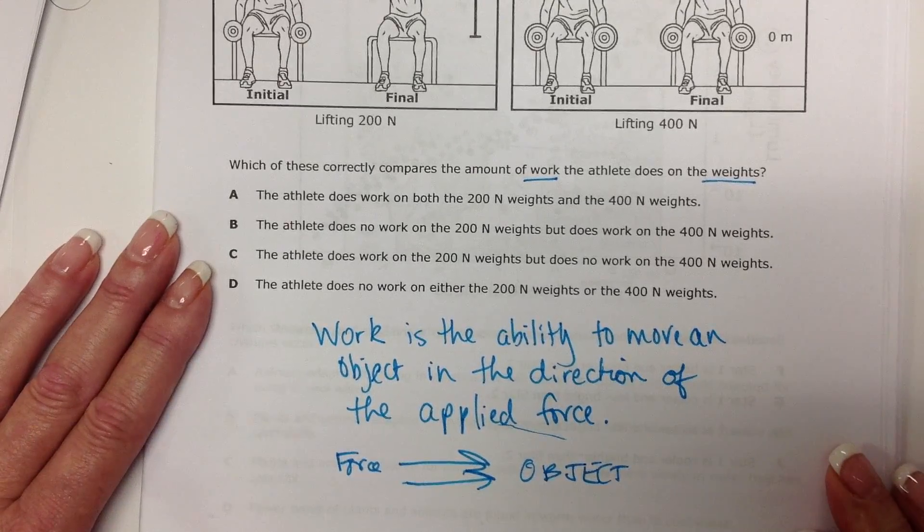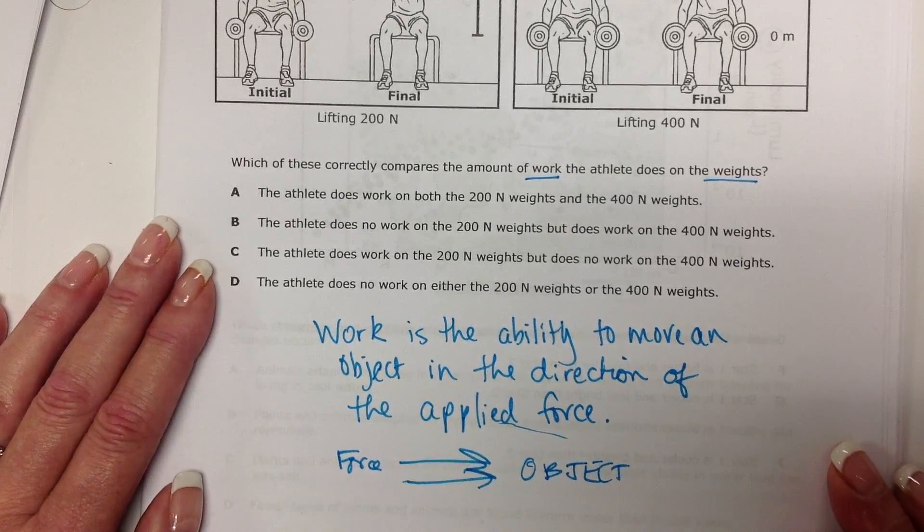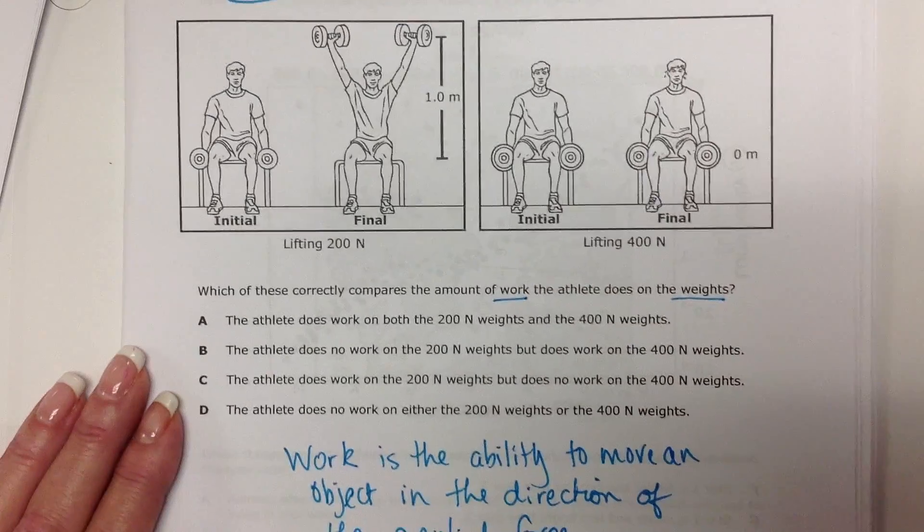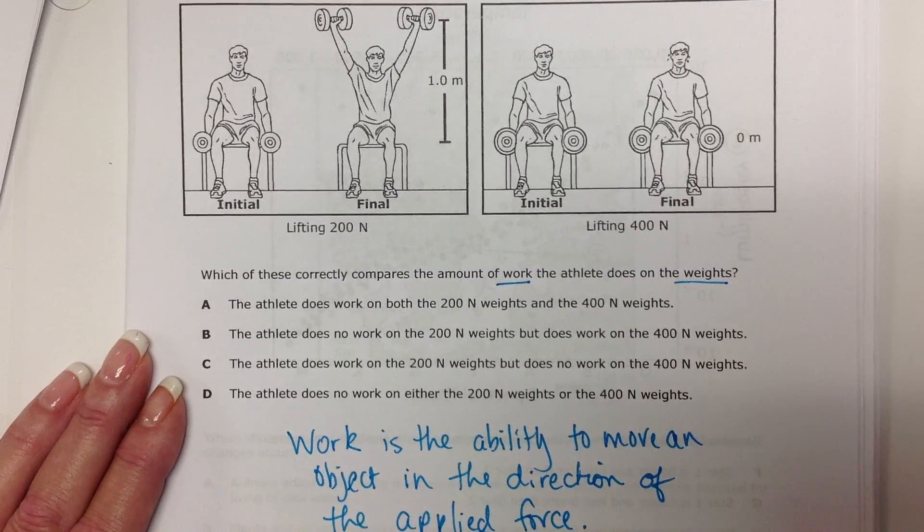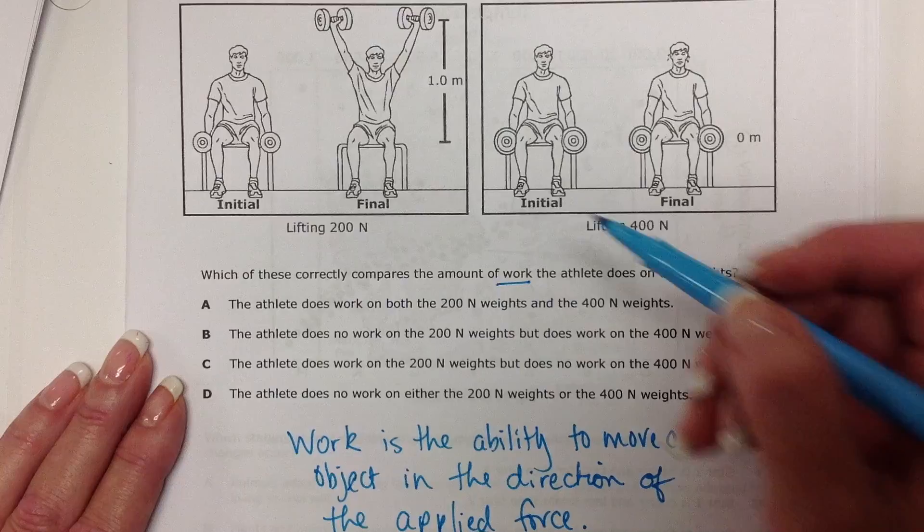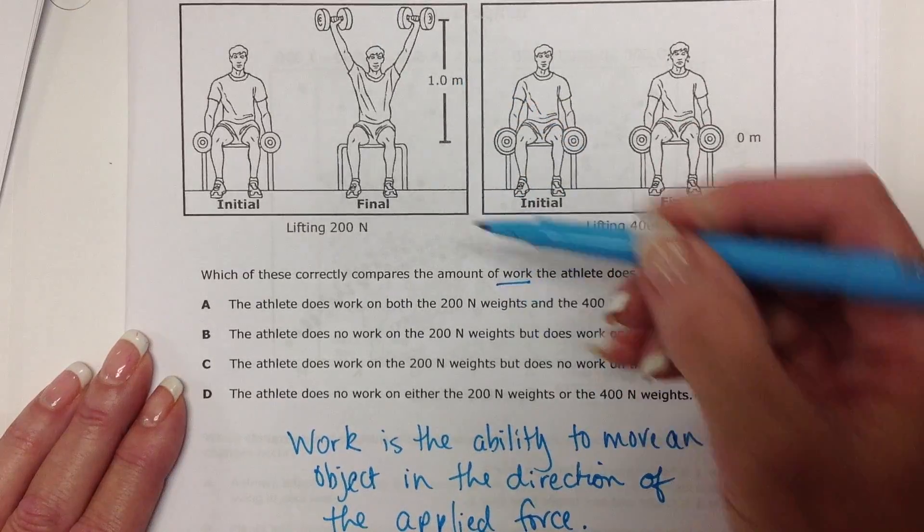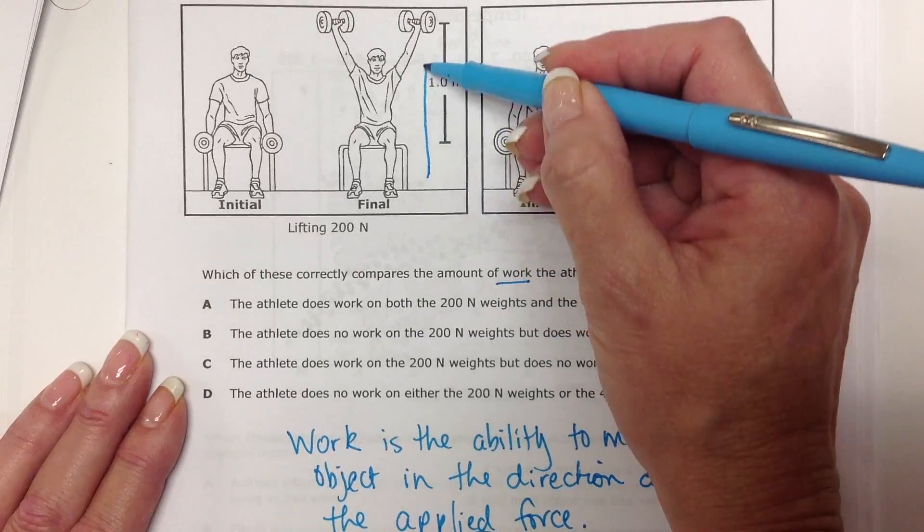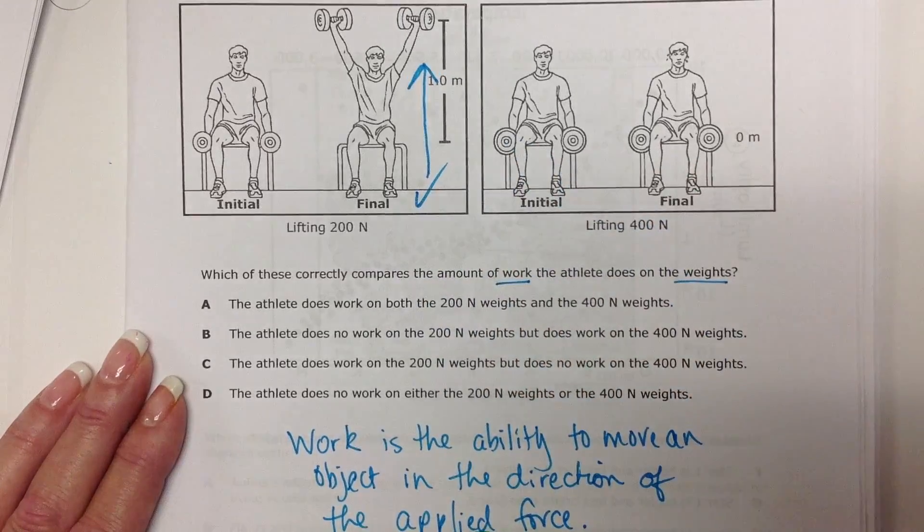So, with the weight lifter, he's applying his force upwards, and we know that he's able to lift 200 pounds upwards. And so, his force is this way, and the object's moving this way. Okay, so this is work.